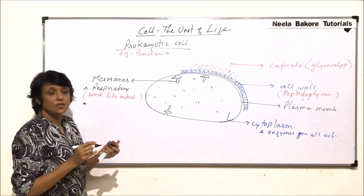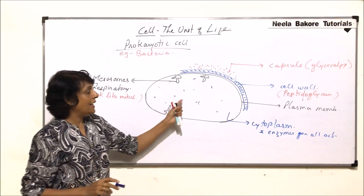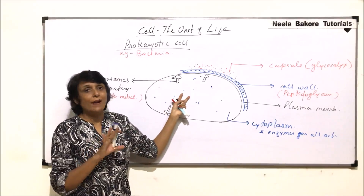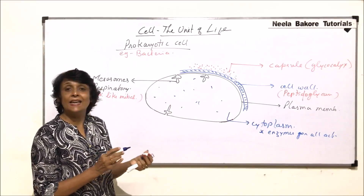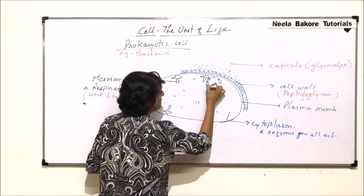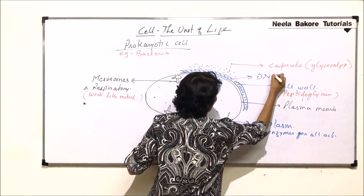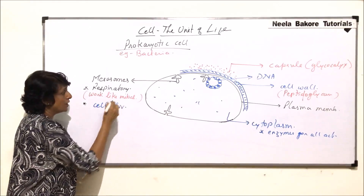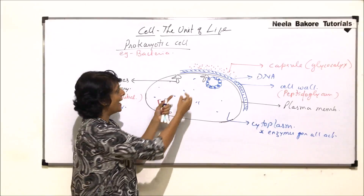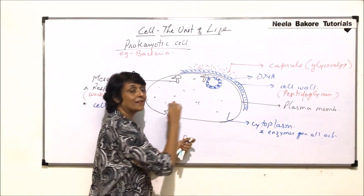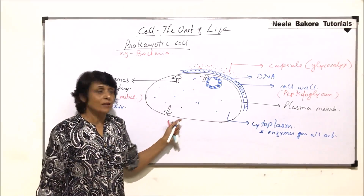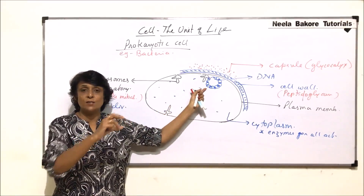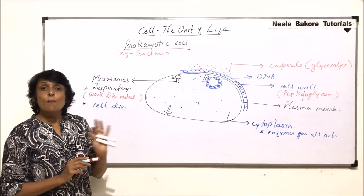There is one more function of mesosomes. The circular genetic material could be in the center when the cell is not dividing. When the cell is dividing, this circular DNA is attached to the plasma membrane or to the mesosome. Mesosomes also help in cell division — the circular DNA gets its copy made, one part remains attached here, the other goes to the other part, and then the constriction or cell wall formation takes place. That is why the DNA of a cell about to divide would be found attached near the plasma membrane, closer to the mesosome.